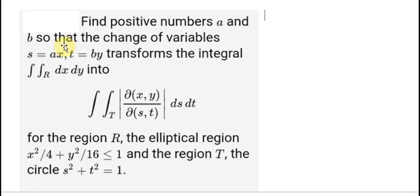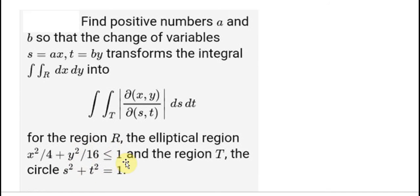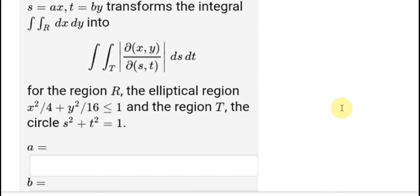Here is the question: given positive numbers a and b, the change of variables x equal to as, t equal to by transforms the double integral over the elliptical region R, where x squared over 4 plus y squared over 16 is less than or equal to 1, into the circle region where s squared plus t squared equals 1. The question asks to find a and b.